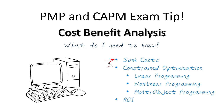Sunk costs is any money or resources that you have placed into the project already. Now, according to PMI, you do not consider sunk costs whether your project is successful or is on a successful track or not, because it's money that's already been spent. That's an oversimplification, but that's primarily what they might ask you about in that particular case.